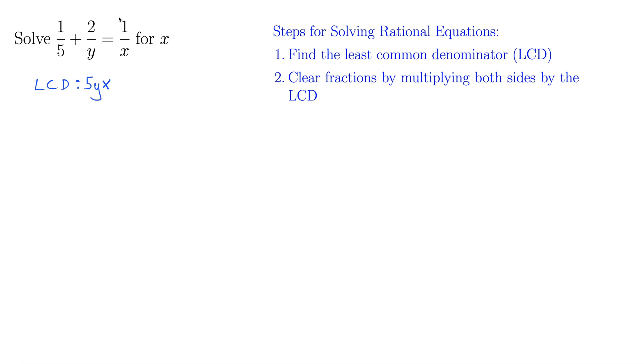Alright, next step is to multiply both sides by that LCD. So 5yx over here and 5yx on this side. 5yx. Okay, we distributed across to both these terms on the left. Notice in the first one, the 5 is going to cancel out, leaving us with xy on the top. The 5s are gone.